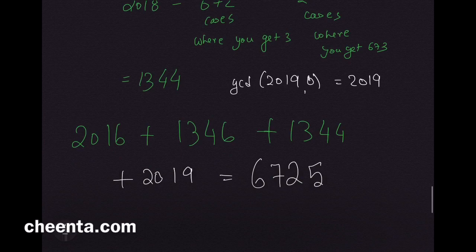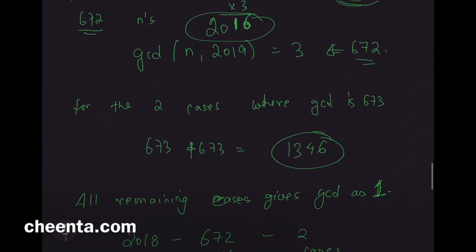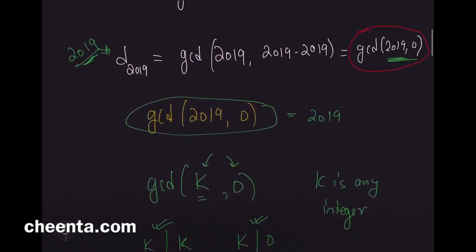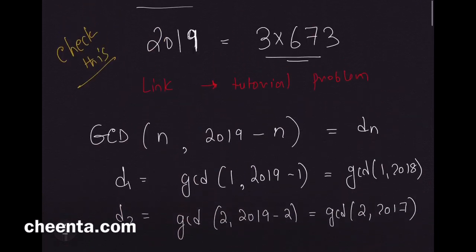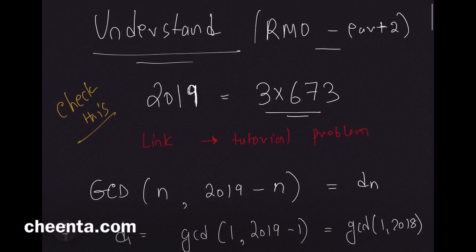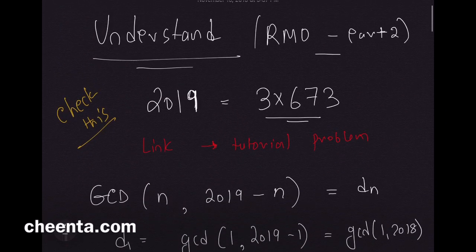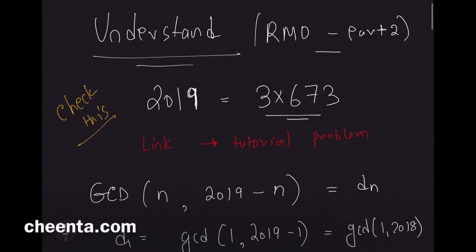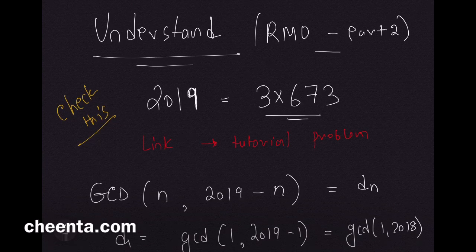So 6725 is the final answer. Now go back to the tutorial — the link is in the description — and try the problems related to this beautiful problem we just solved. Only then can you learn something more about these ideas.